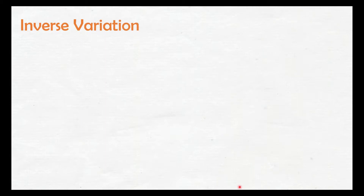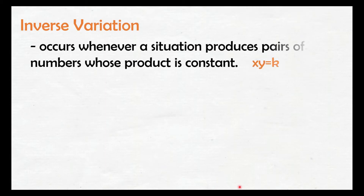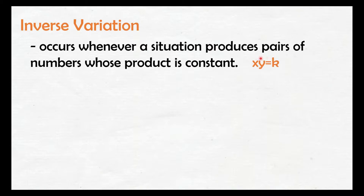Let us define inverse variation. Inverse variation occurs whenever a situation produces pairs of numbers whose product is constant. So we have a pair of numbers — these are our two variables. We have variables x and y. When we multiply those two variables and the answer we get is constant, that is inverse variation.